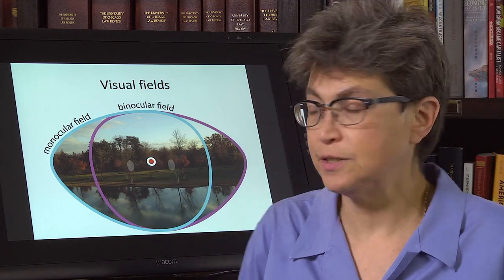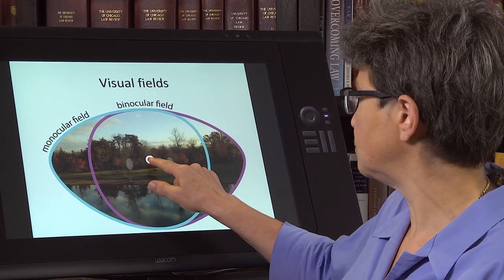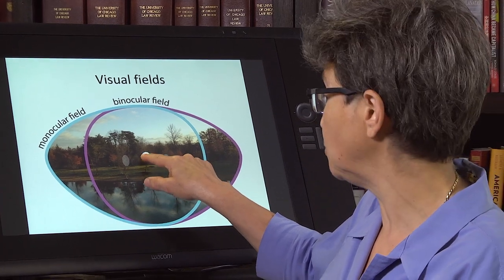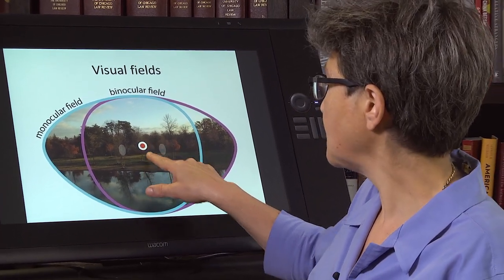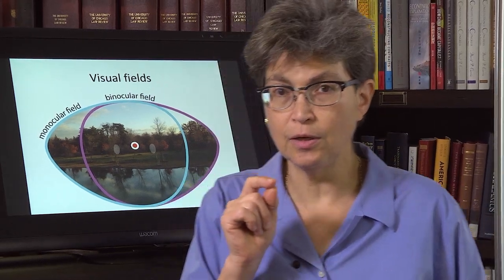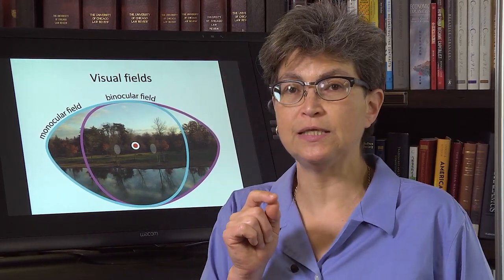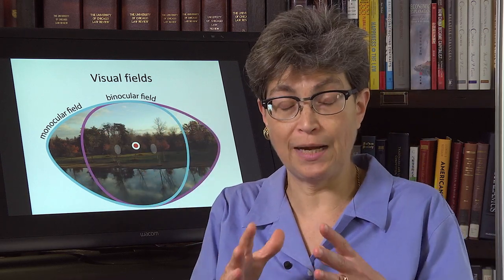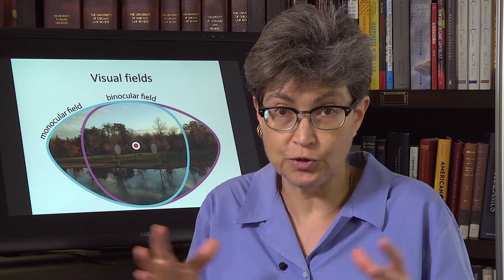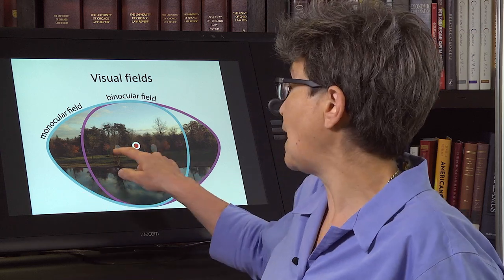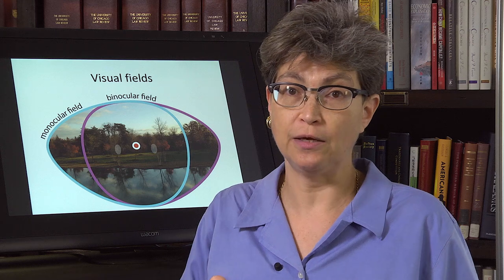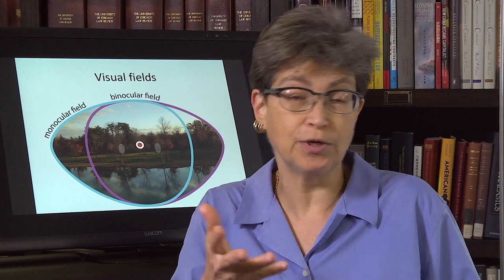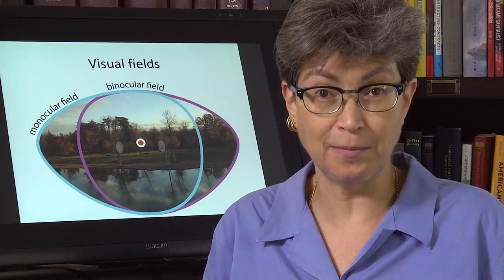One of the important points to remember is that these fields are dependent on one fixating on this middle point. So the first important point is that, swamped out by the binocularity of the middle — the bulk of the visual field — is the fact that we have two blind spots, one for each eye. There is a whole area right here that you cannot see. There's no information coming in from there.